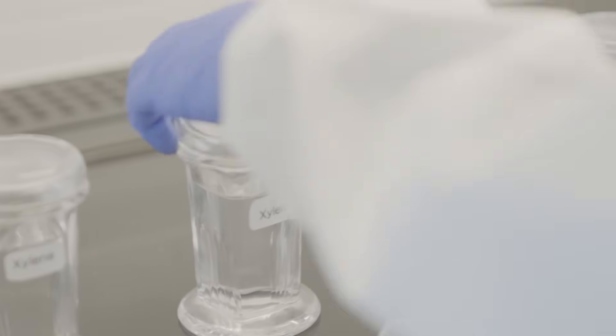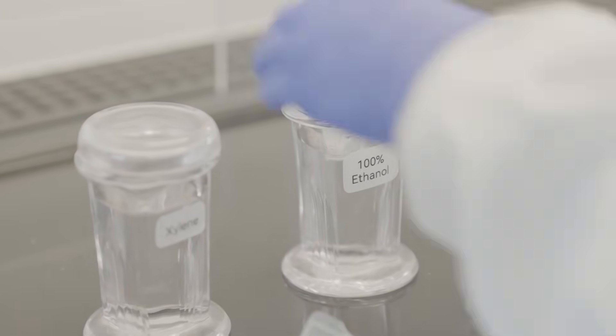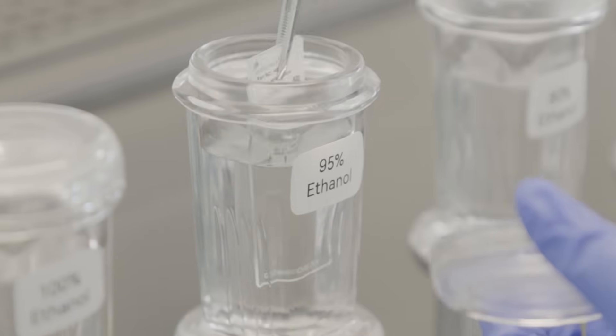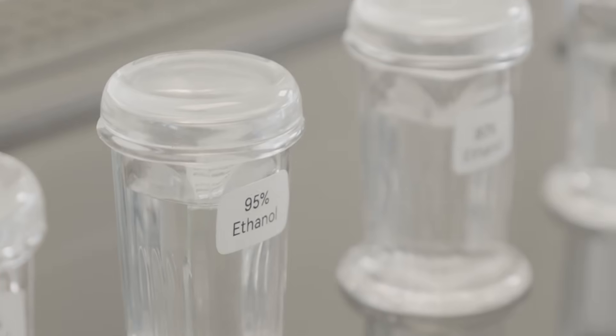Next, start rehydration by placing sections into a container of 100% ethanol for five minutes. Sequentially place the sections into containers of 95%, 80%, and 60% ethanol for five minutes each.